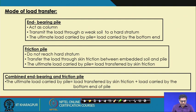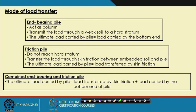End bearing piles act as columns, transmitting load through weak soil to a hard stratum. Ideally, the ultimate load carrying capacity should equal the load at the bottom end. The pile load carrying capacity comes from friction on the side soil and the tip bearing. If all resistance comes from the tip, it is called an end bearing pile.